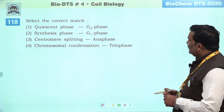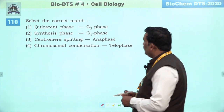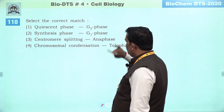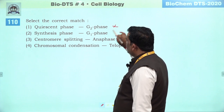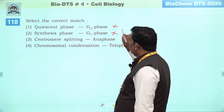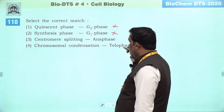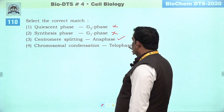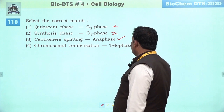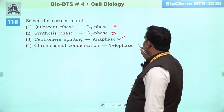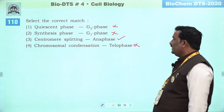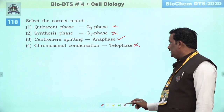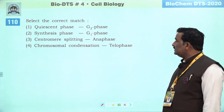Next question: select the correct match. Pre-cent phase G1 mein aati hai, G2 mein nahi. Synthesis hum S ko kehte hain, G1 ko nahi. Centromere splitting anaphase mein — yeh bilkul sahi hai. Condensation telophase mein — balki decondensation hota hai. Isliye yeh bhi wrong hai. Third is the right answer.